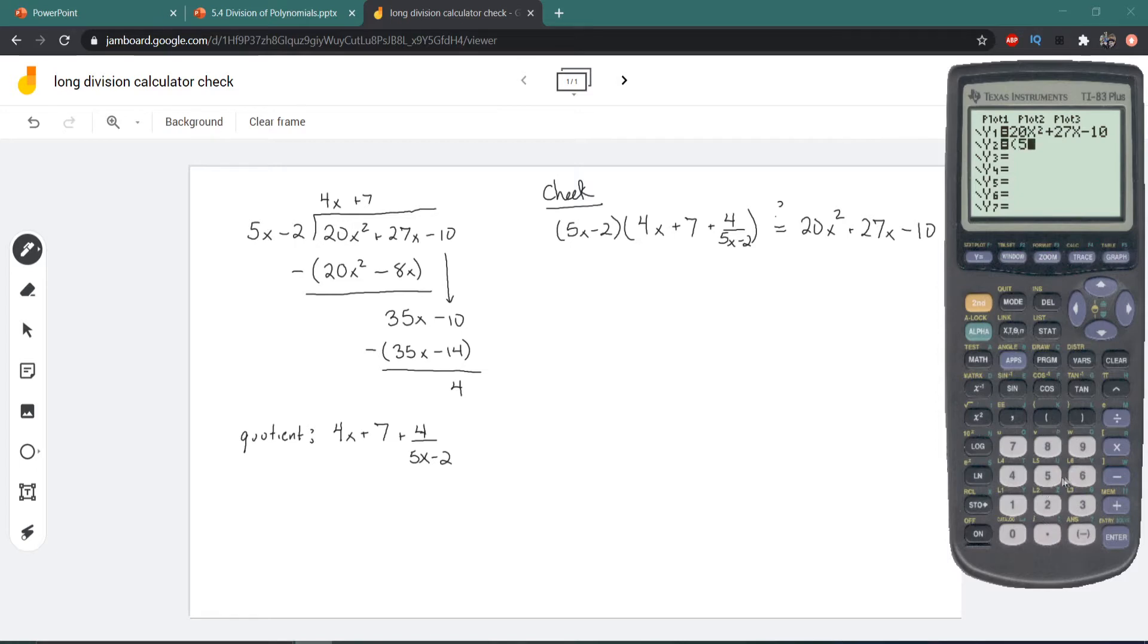You have to be really careful with parentheses when you're doing this otherwise it won't work. So we have 5x minus 2 like this, and then we're going to multiply that by 4x.